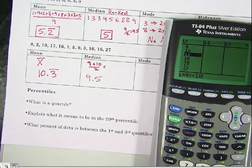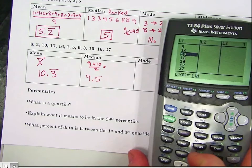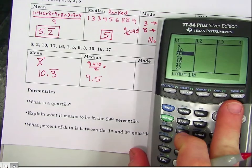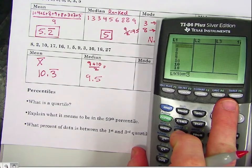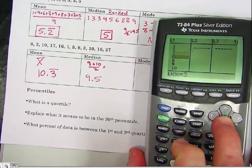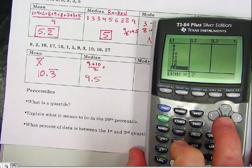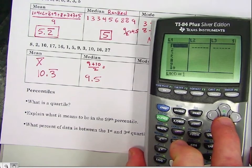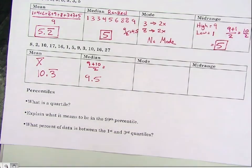Now one thing the calculator doesn't give you is the mode. So for that, you do have to still kind of look through there, and what do we think? What happened the most? No mode. There were two 10s and two 16s, so no mode.